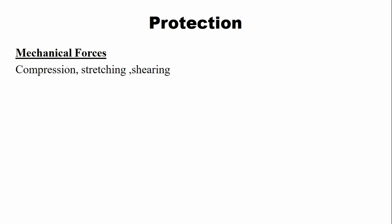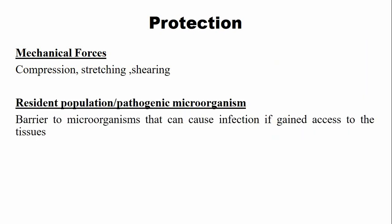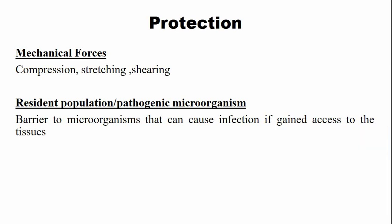The oral mucosa has numerous functions. The first function is protection. The oral mucosa protects the deeper tissues and organs from various mechanical forces that arise during daily functions, for example during mastication or during speech. The oral mucosa also acts as a barrier against normal oral microorganisms, also known as the resident population or normal oral flora, and at the same time acts as a barrier against pathogenic microorganisms. If these microorganisms gain access and enter into the deeper tissues below the epithelium, they produce pathology.